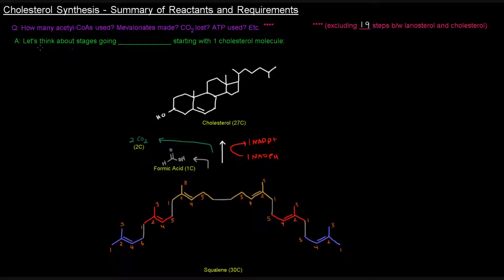So let's do this. Let's think about the stages going backwards, starting from one cholesterol molecule. So we have one 27-carbon cholesterol molecule here, and it came from squalene. In this process we used oxygen and we lost three carbons, two as carbon dioxide and one as formic acid here.